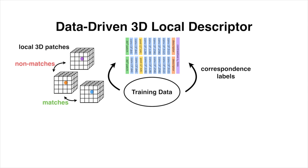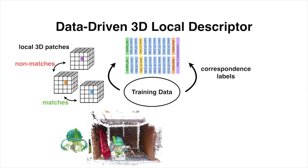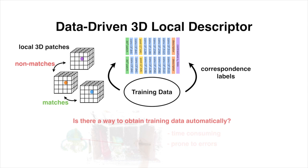However, obtaining training data by manual annotations is a challenging endeavor. In particular, acquiring ground truth correspondences between partial 3D scanning data by manually labeling keypoint pairs is not only time consuming, but also prone to errors. So, is there a way to obtain training data automatically?